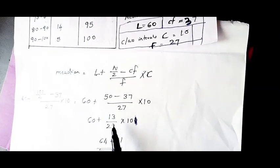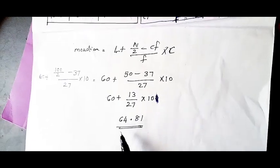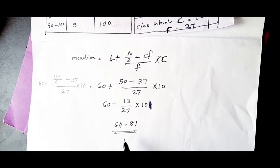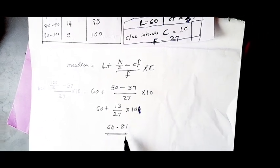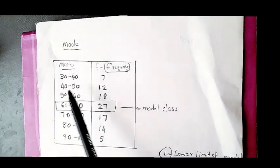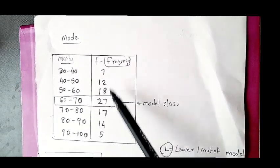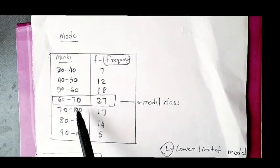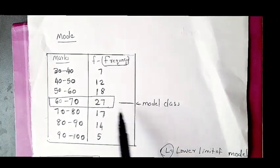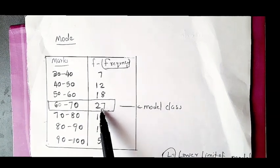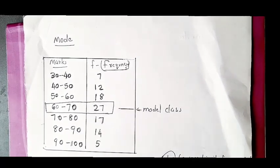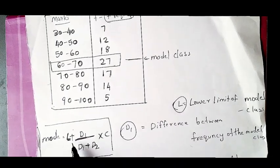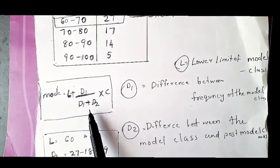15 by 27 gives approximately 18. If a class has the maximum frequency, it is the modal class. We tell where the mode is — each class will show its frequency. The mode formula is L plus D1 by D1 plus D2 into c.